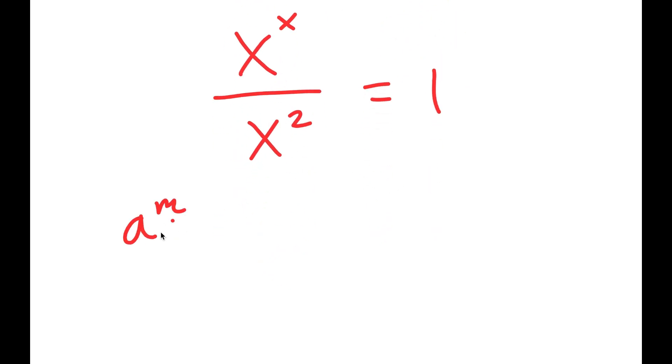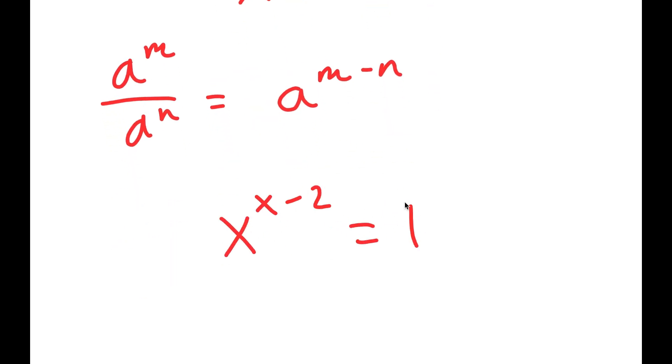Now I'm going to use the property a to the power of m over a to the power of n is equal to a to the power of m minus n. So this turns into x to the power of x minus 2 is equal to 1.